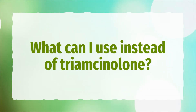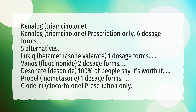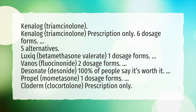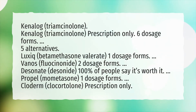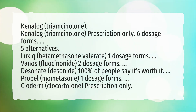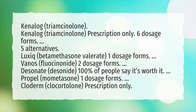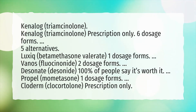What can I use instead of Triamcinolone? Kenalog (Triamcinolone) is prescription only with 6 dosage forms and 5 alternatives, including: Luxiq (Betamethasone Valerate, 1 dosage form), Panos (Fluocinonide, 2 dosage forms), Desonate (Desonide, 100% of people say it's worth it), Elocon (Mometasone, 1 dosage form), and Cloderm (Clocortolone, prescription only).